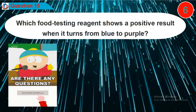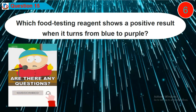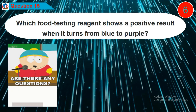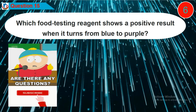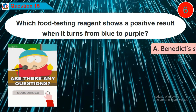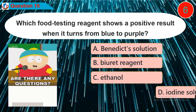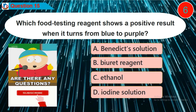Question 15: Which food testing reagent shows a positive result when it turns from blue to purple? Is it option A, B, C, or D?